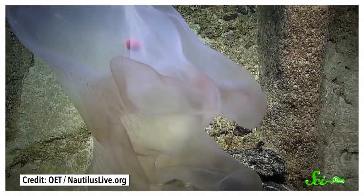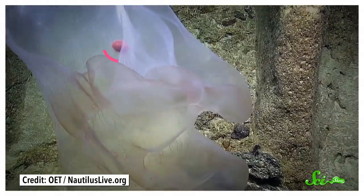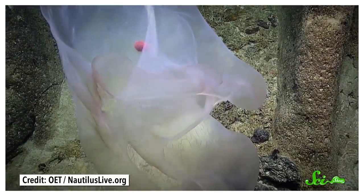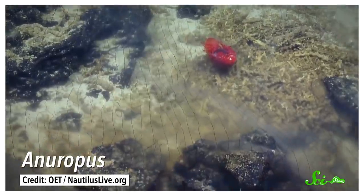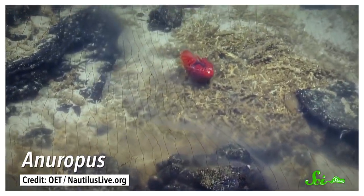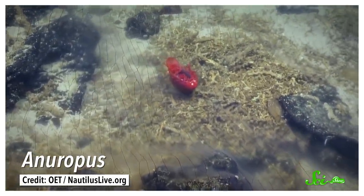And nothing escapes the inside of a deepstaria jelly alive. Except one creature. Almost every deepstaria jellyfish encountered in the deep sea has a little friend living inside of it, the giant isopod Anuropus. Picture your typical garden pillbug, and then supersize it. They can get several centimeters long.